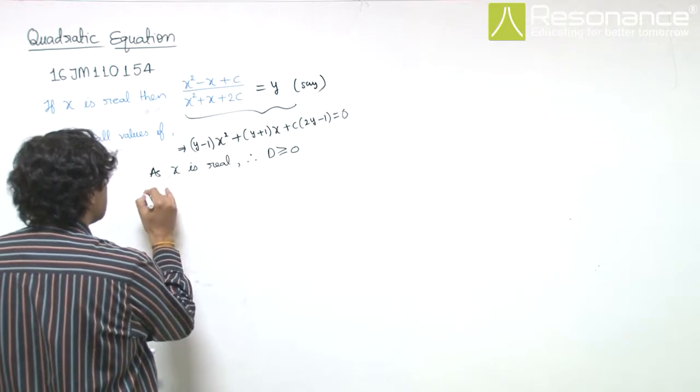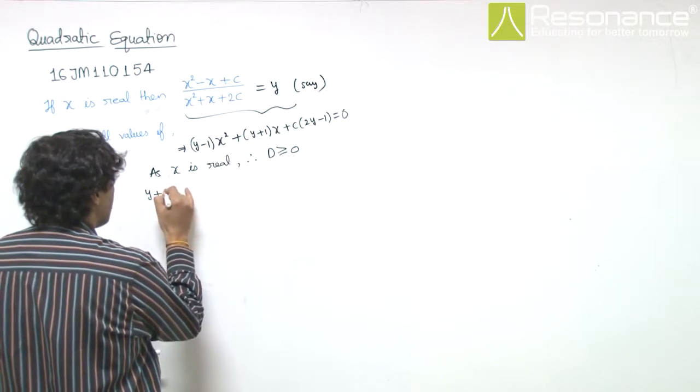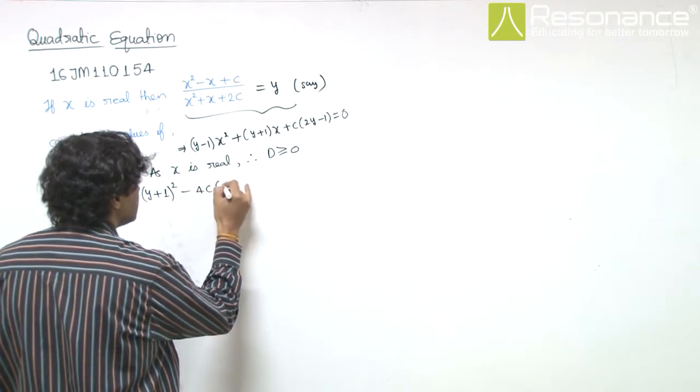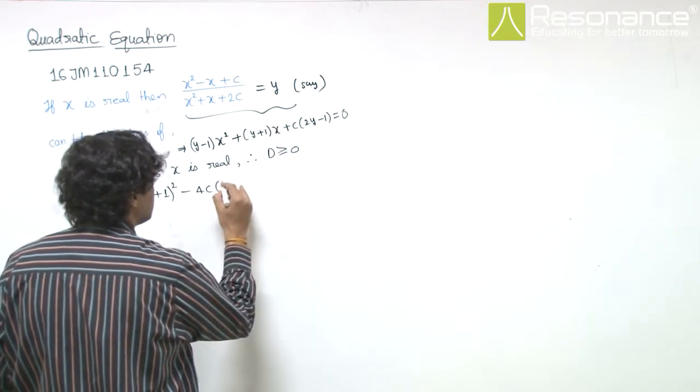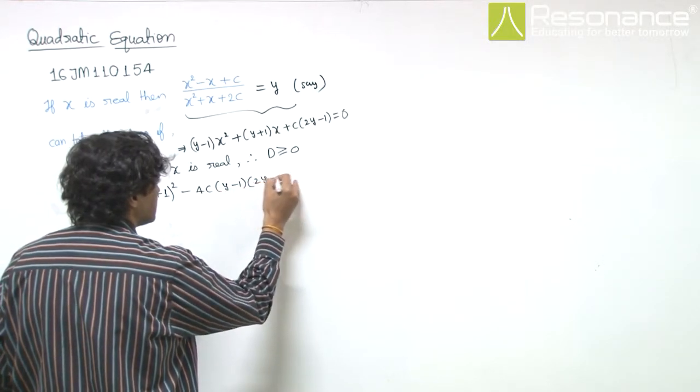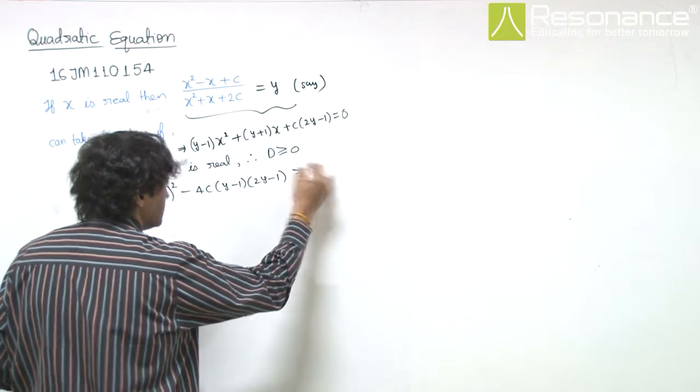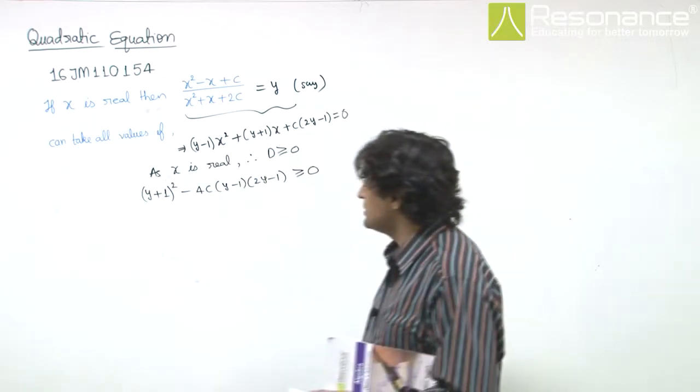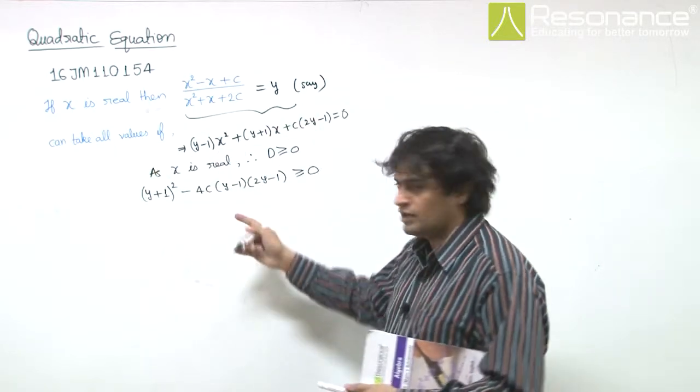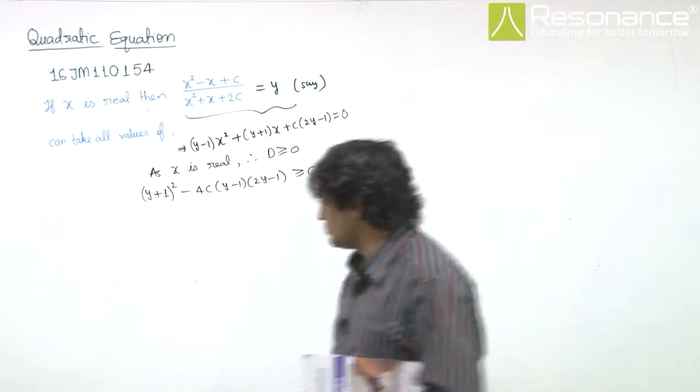So, discriminant is (y plus 1) square minus 4c(y minus 1)(2y minus 1). Actually, it should be greater than equal to 0, so that y can take all values from minus infinity to plus infinity, all real values.